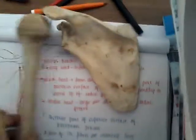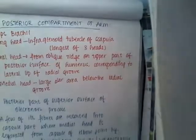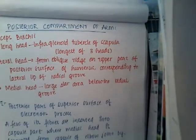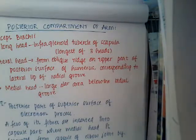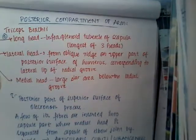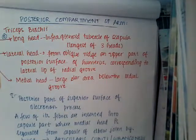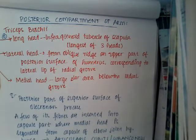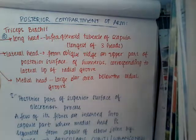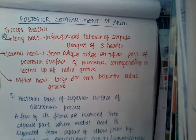This is the insertion of the triceps muscle. The nerve supply of the triceps is by the radial nerve. This is about the posterior compartment of the arm. Thank you for watching — if you have any doubts or feel something is inadequate, please comment in the comment section. Thank you.